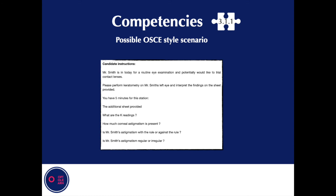On the additional sheet provided, the questions are as follows: What are the K readings? How much corneal astigmatism is present? Is Mr. Smith's astigmatism with the rule or against the rule? Is Mr. Smith's astigmatism regular or irregular?